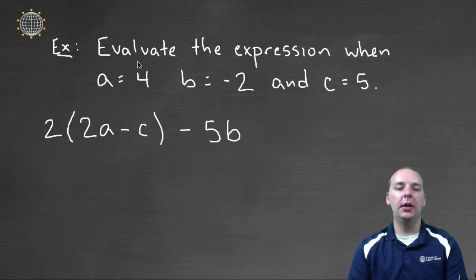Let's look at one more example. Let's say we've got a large variable expression with multiple variables. We're going to evaluate this expression when a is 4, b is negative 2, and c is 5. So basically this is just plug and chug.